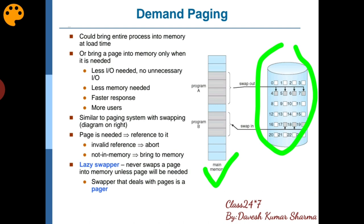Demand paging में swap in swap out के लिए जो responsible होता है वो होता है lazy swapper। Lazy swapper — as the name is suggesting, lazy means जब उसको जरूरत होगी वो तभी work करेगा। That means जब तक कोई page needed नहीं है, required नहीं है, until unless it will not either do swap in or swap out, तब तक वो नहीं करेगा।